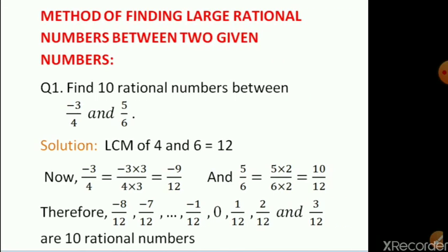Moving on to the next method: finding a large number of rational numbers between two given rational numbers. In the previous cases we found a limited number of rational numbers. In this case, if you are asked to find 10 or 15 rational numbers, this method will be easier. What we are going to do is find the LCM of the given rational numbers. In this question, minus 3 upon 4 and 5 by 6 are the two given rational numbers.